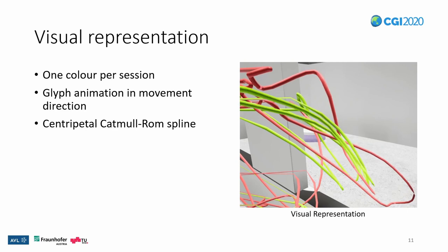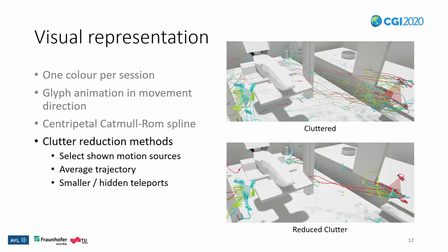To the right you can see the combination of these features — in this case, the glyphs are an icon of a head-mounted display to indicate head movements. To address clutter from trajectories, users can choose to only show select motion sources, for example only the head movement. Alternatively, they can display an average trajectory that combines all three motion sources together while still showing large changes in any one of them. Also, since teleportation sections are not of much interest, we made those trajectory sections thinner, and users can opt to remove them completely.